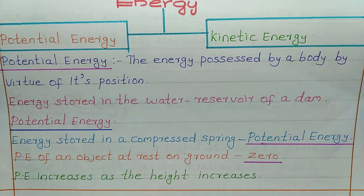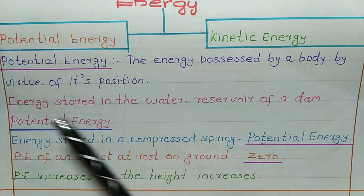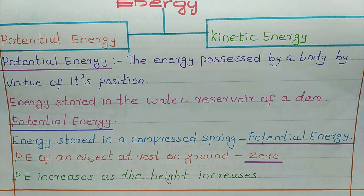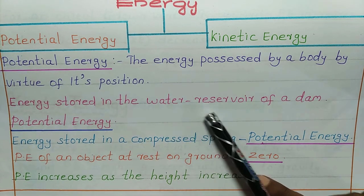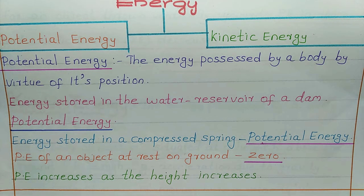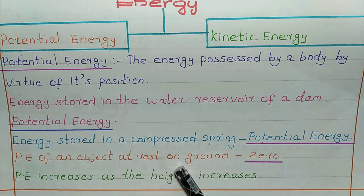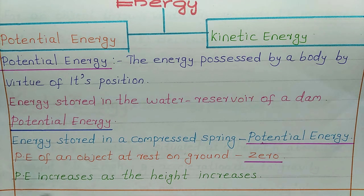Potential energy is the energy possessed by a body by virtue of its position. Energy stored in the water reservoir of a dam is potential energy. Energy stored in a compressed spring is also potential energy. Potential energy of an object at rest on the ground is zero. Potential energy increases as the height increases — it is directly proportional to the height of the object.